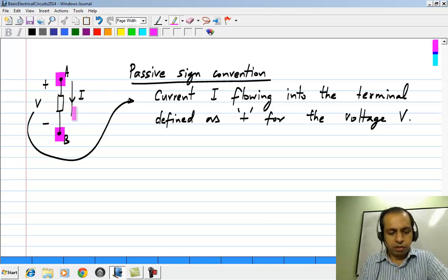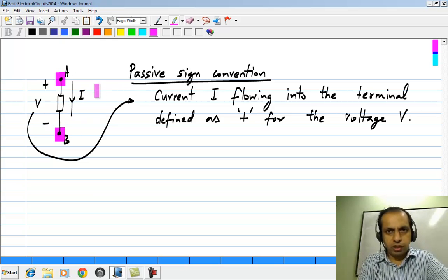Otherwise, there will be some ambiguity. If we take I the other way, then it will be negative of whatever I we take in this way.